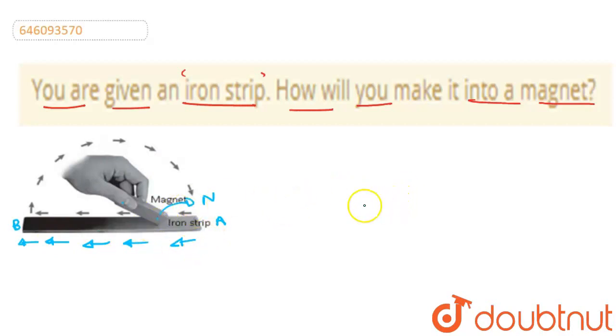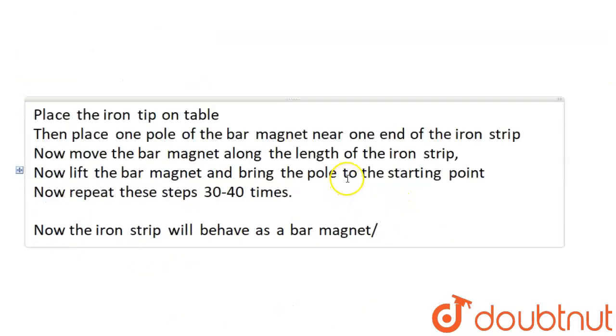So, our answer will be written in the way I have explained. What I have told you, I have written step by step. So, place the iron strip on the table. Just like I have shown you in the diagram.